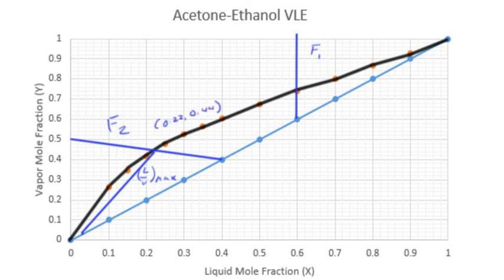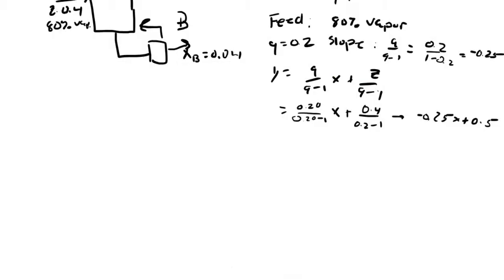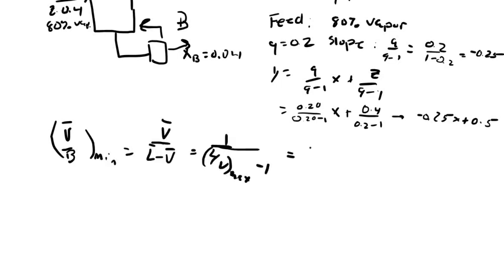So we can find that the L over V max is just the slope of this line over here. And you'll find that this gives you an L over V max of about 2. From this relationship you can find that V bar over B minimum and this will give you a minimum boil-up ratio of about 1.